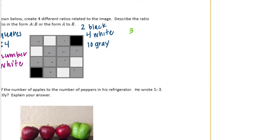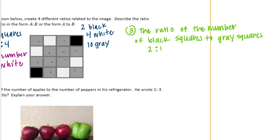Let's do another one, a third one. Let's do black squares to gray squares. So we could say the ratio of the number of black squares to gray squares. So that would be, black squares is two, gray squares is ten.